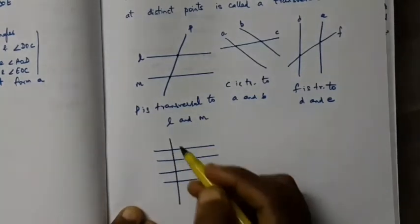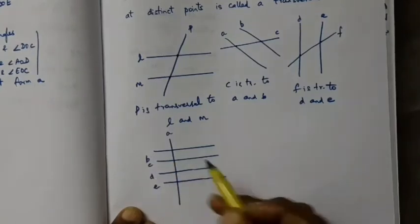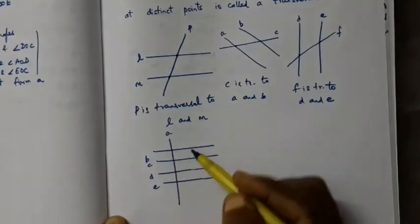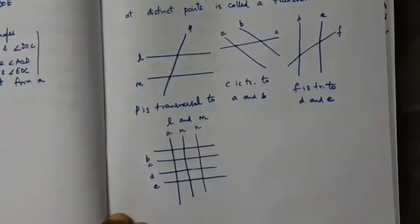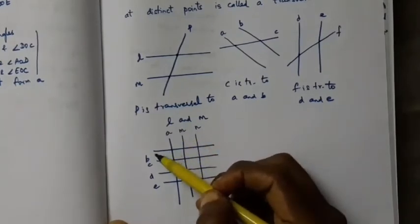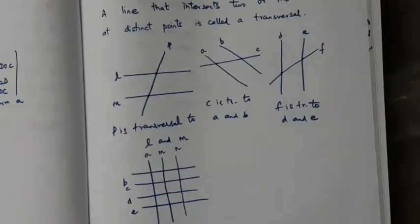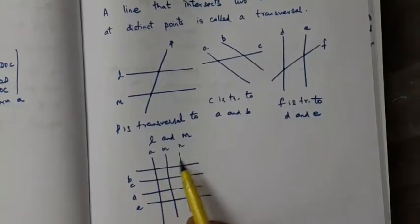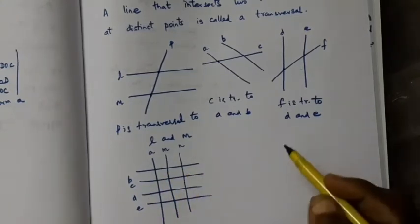We can give more examples. If I have many lines — A, B, C, D, and E — then A is transversal to B, C, D, and E. If I draw another line M and another line N, then M is transversal to B, C, D, E, and N is also transversal to B, C, D, E. Similarly, B is transversal to A, M, and N, and C and D are also transversals to A, M, and N.